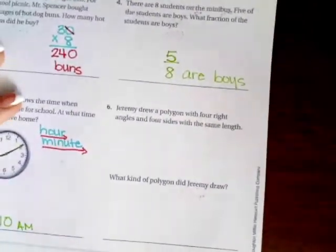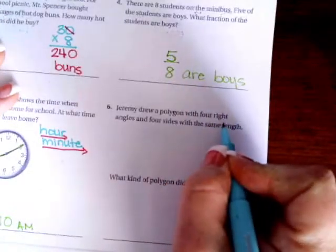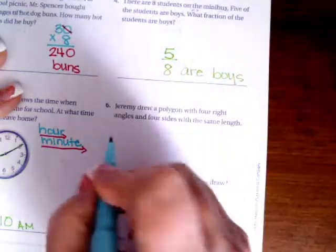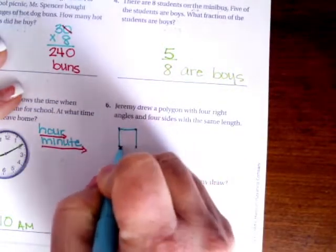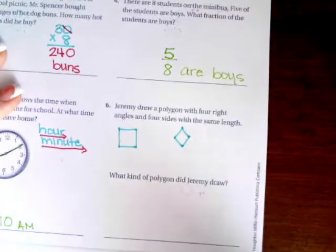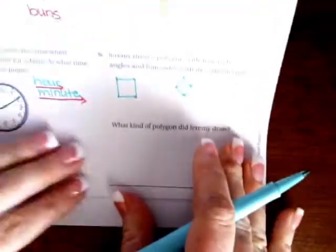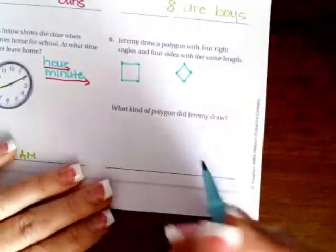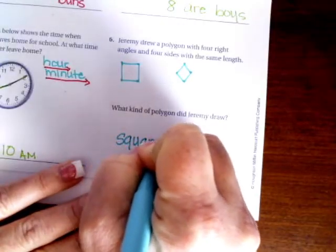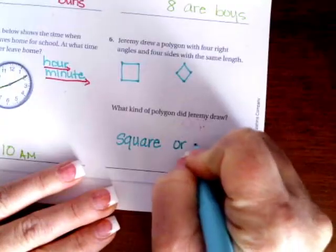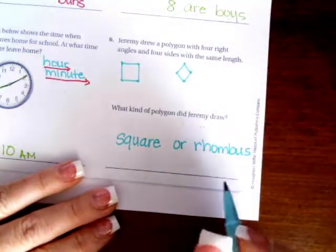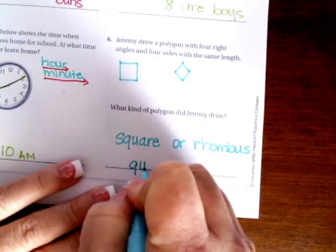Jeremy drew a polygon with four right angles and four sides with the same length. So he could have done two different things. He could have either drawn a square or a rhombus, which is also a diamond, but both of those are known as quadrilaterals.